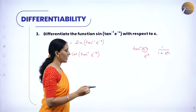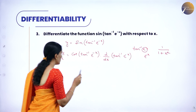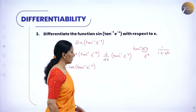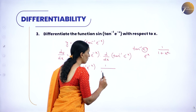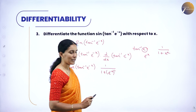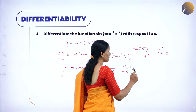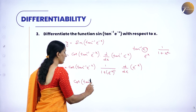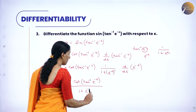Now differentiate tan inverse of e power minus x. The derivative of tan inverse is 1 by (1 plus x squared). So write it as 1 divided by (1 plus e power minus x, squared). Because in the place of x, you replace e power minus x. But e power minus x is itself a function, so differentiate it again. So this becomes: cos of (tan inverse e power minus x), divided by (1 plus e power minus 2x).